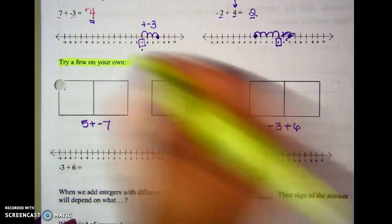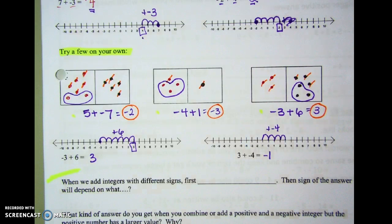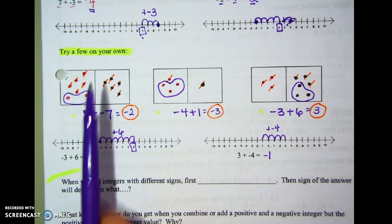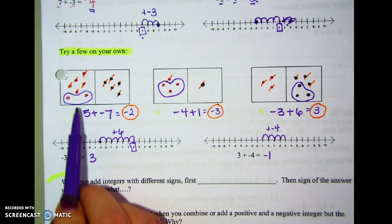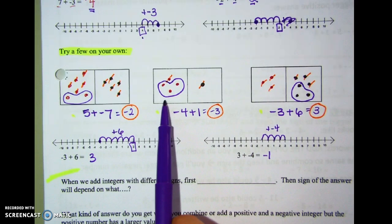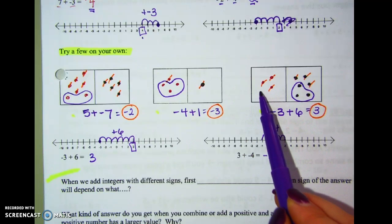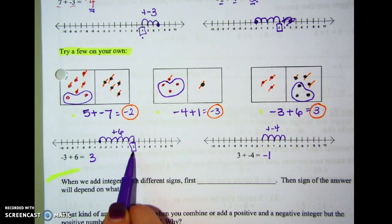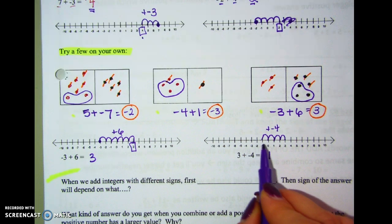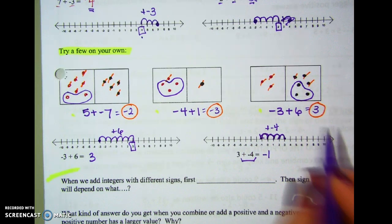Try these on your own — pause the video and then we'll check. For five positives and seven negatives, cross out all the pairs until one side is gone; two negatives are left, so negative two. For four negatives and one positive, cross out one pair; three negatives remain, so negative three. For three negatives and six positives, cross off three pairs; three positives left, so positive three. On the number line: negative three plus six hops right to positive three; three plus negative four hops left to negative one.